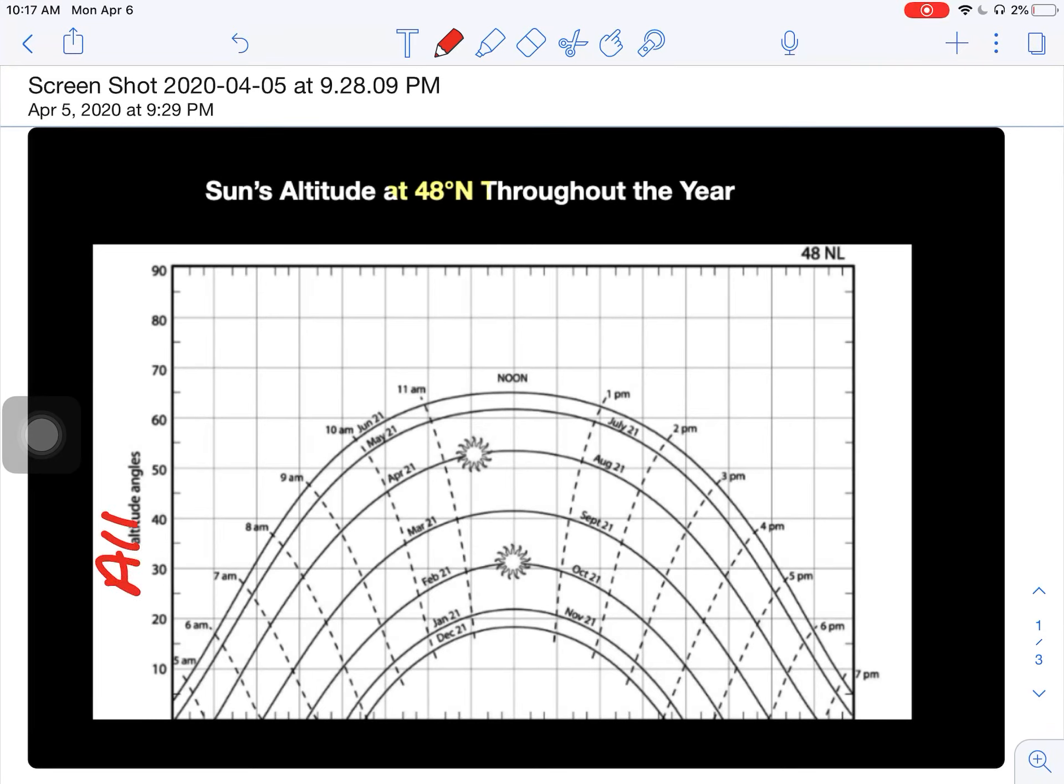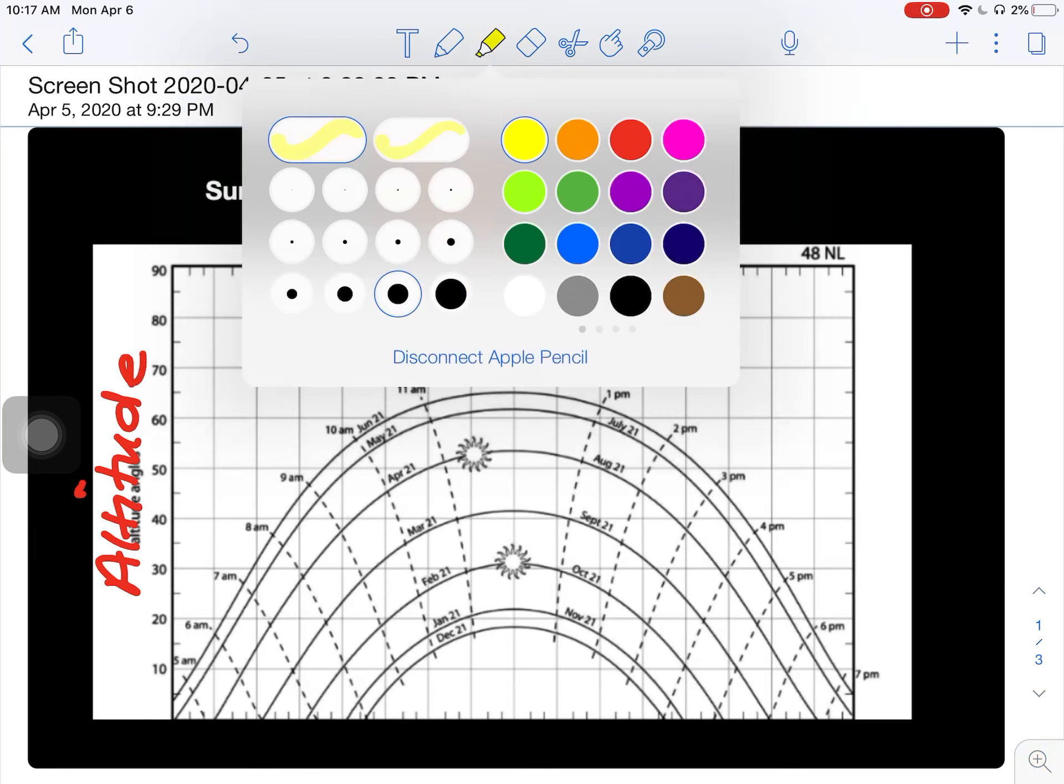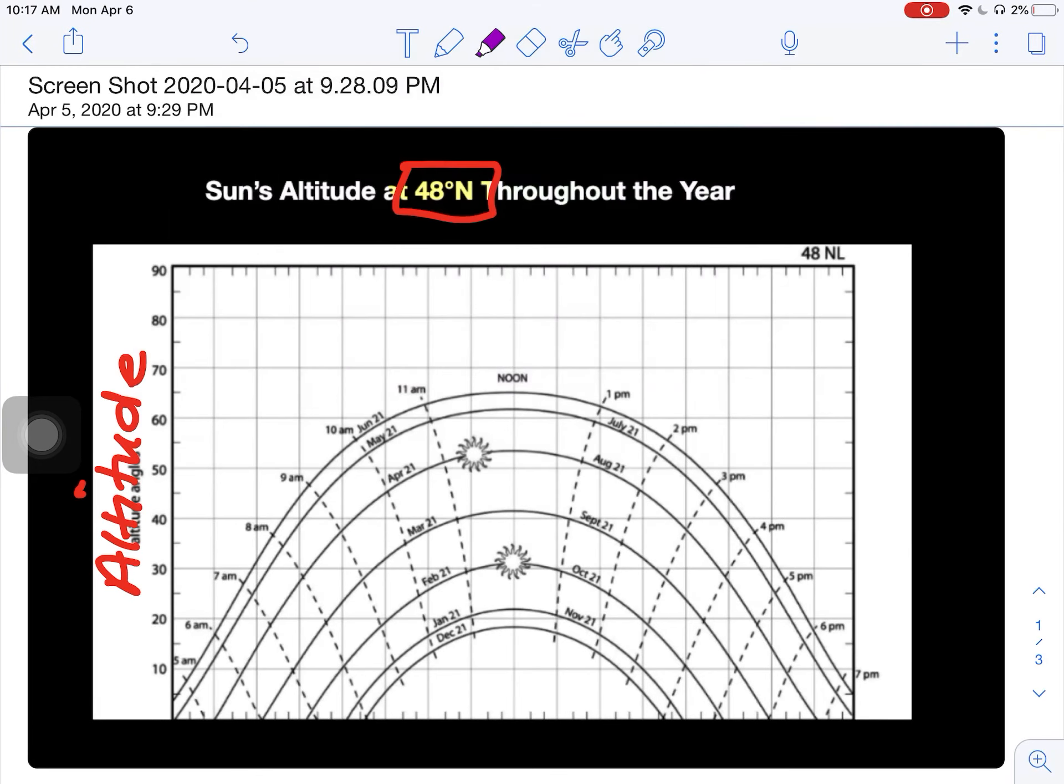Now this diagram here is showing you the altitude of the sun at different times of the year. I'm gonna explain that to you at 48 degrees north, so that's a little bit above where New York is. And I'll show you how it shows you the different times of the year.